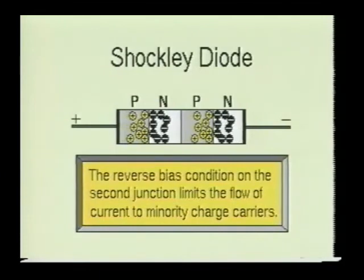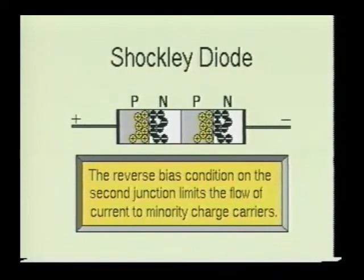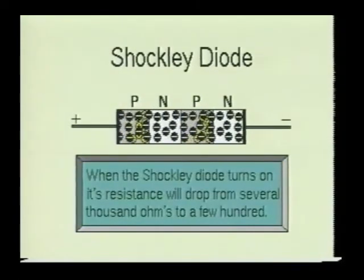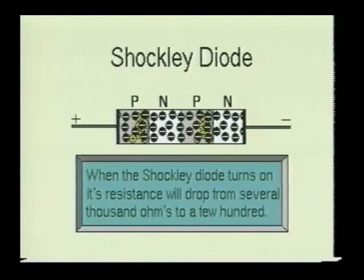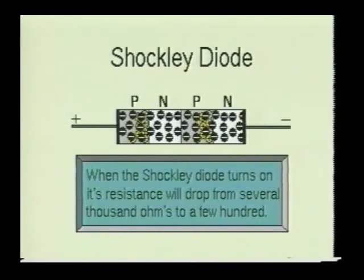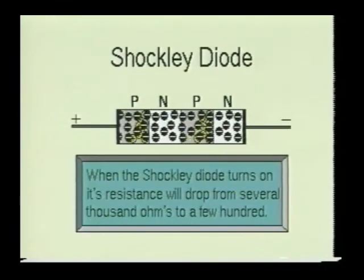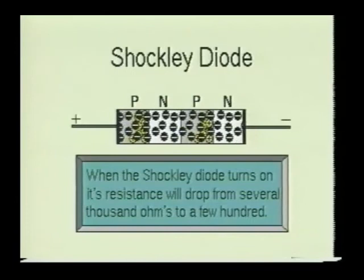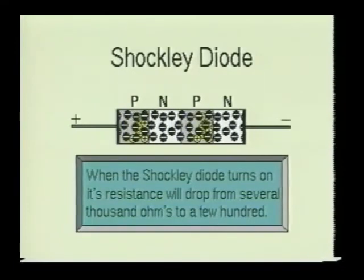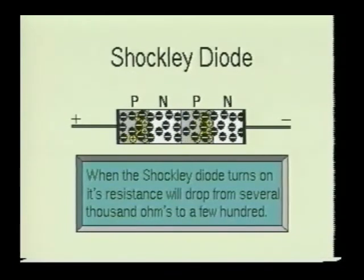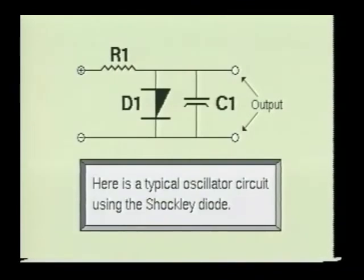When the diode is forward biased, junctions one and three will become forward biased and junction two will become reverse biased. The reverse bias on the second junction will limit the current flow to minority charge carriers. Once the diode's forward biased voltage is increased to the reverse breakdown voltage of the second junction, the diode will turn on. When the diode turns on, its resistance will drop from several thousand ohms to a few hundred ohms. Here we see the Shockley diode being used in an oscillator circuit.